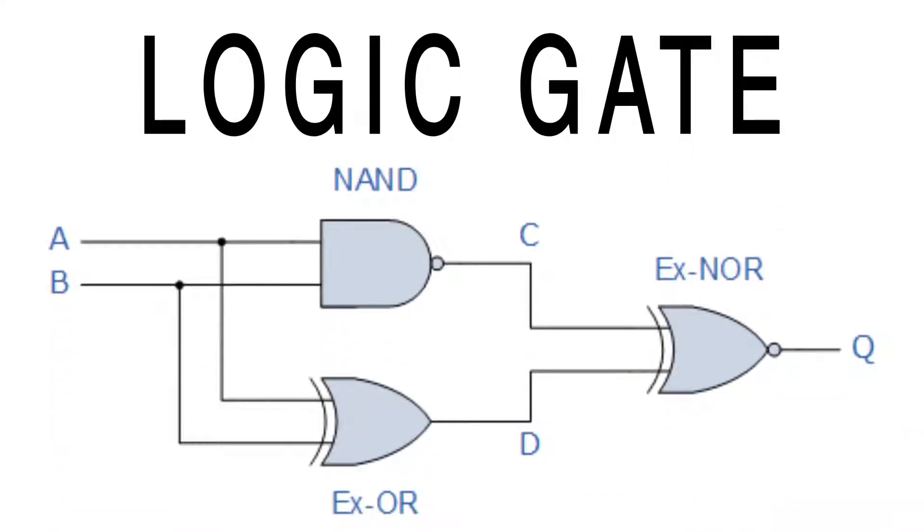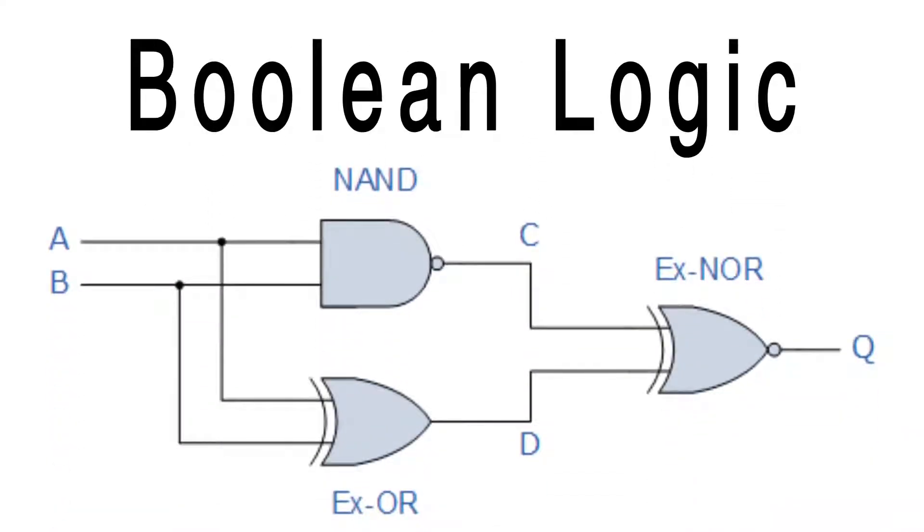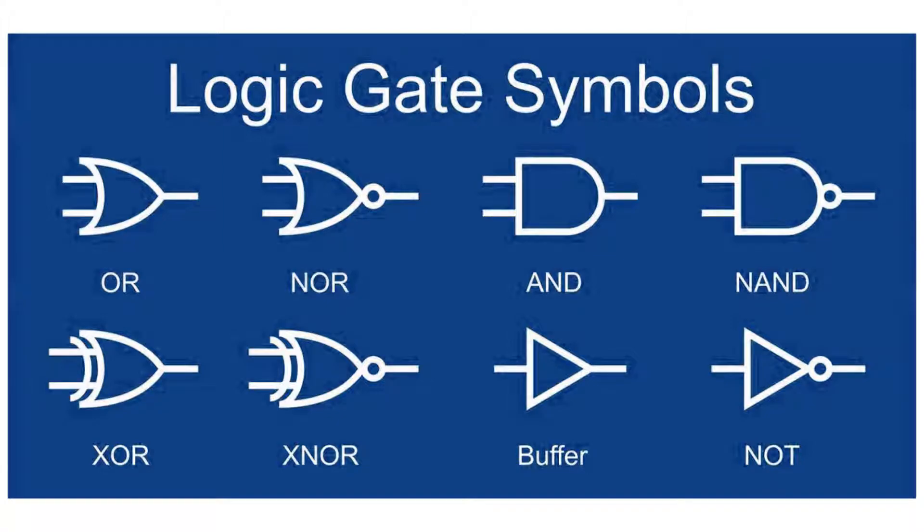I've had several videos on this channel about how computers store numbers and by extension data. But how do they do things with that data? Well, they do it with what is known as a logic gate, the arrangement of which is referred to as Boolean logic. These are the fundamental building blocks for how computers can make decisions based on inputs.